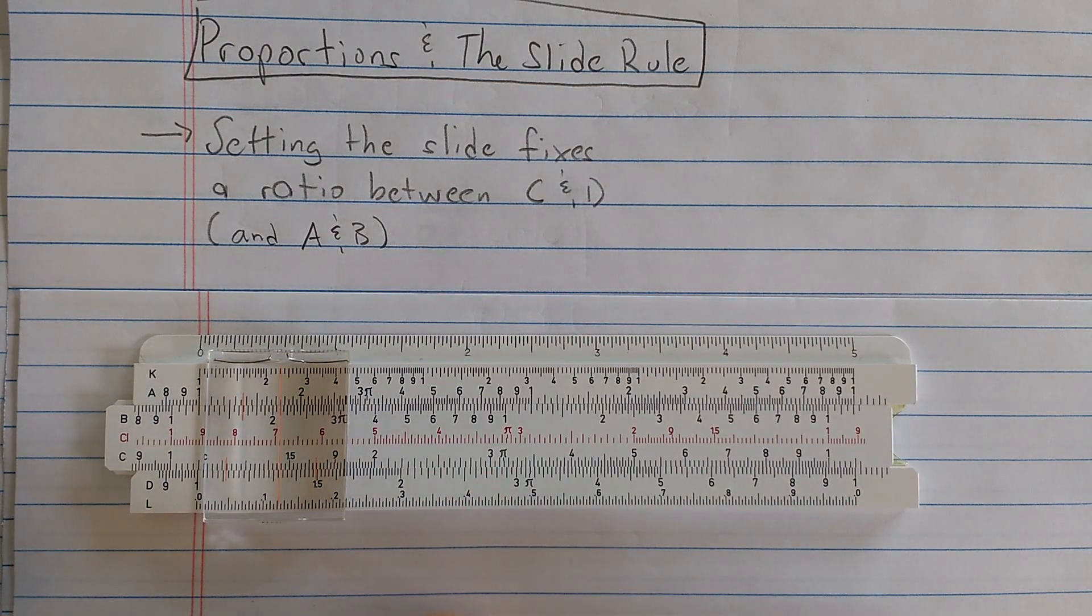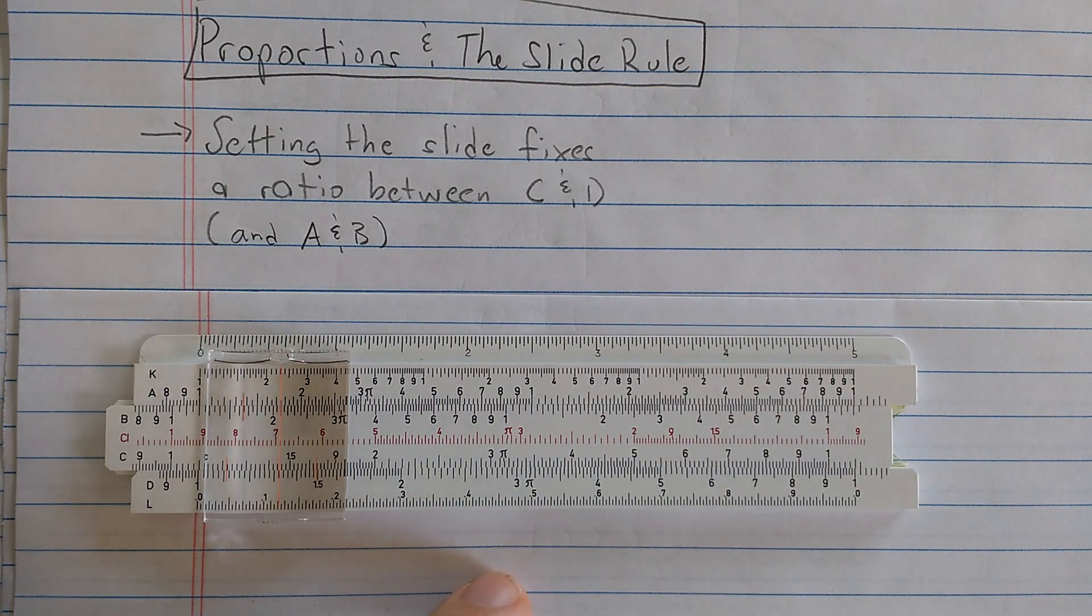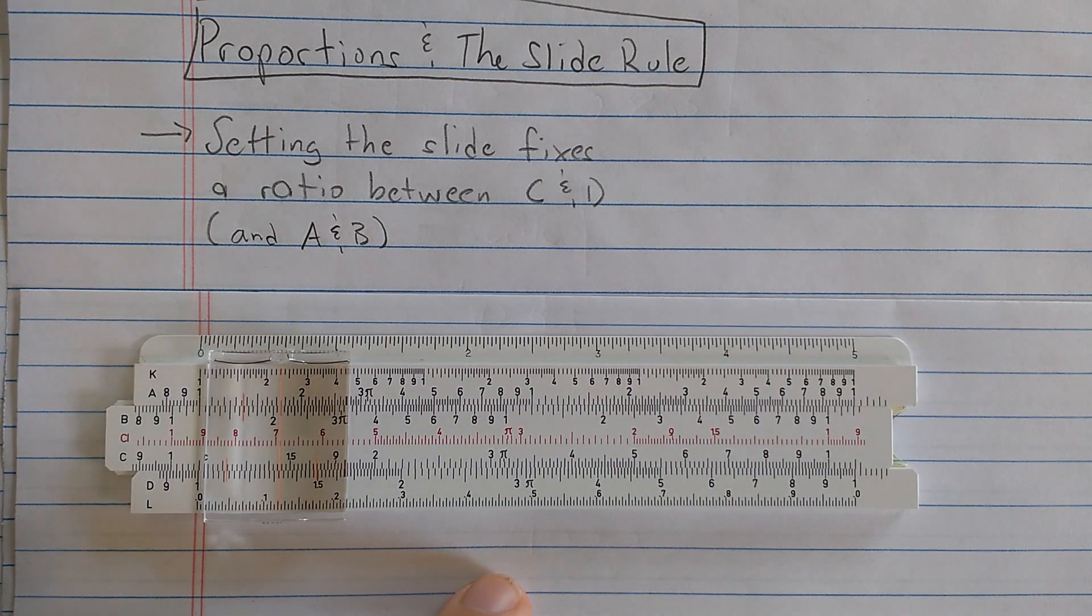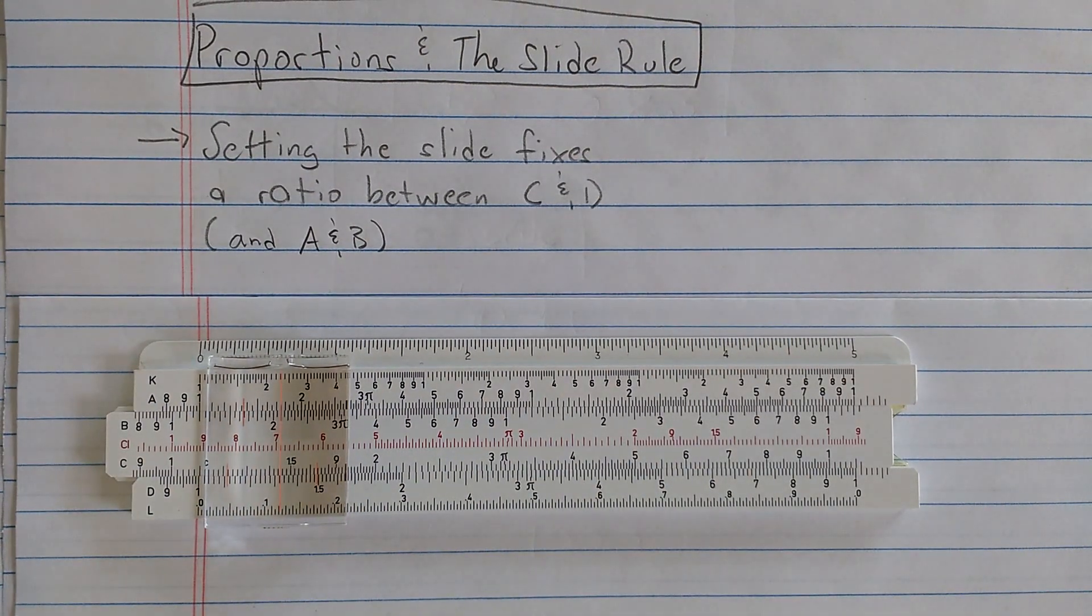Setting the slide fixes a ratio between C and D, the numbers on the C and the D scales, or between the numbers on the A and the B scales. Of course, not the same proportion.